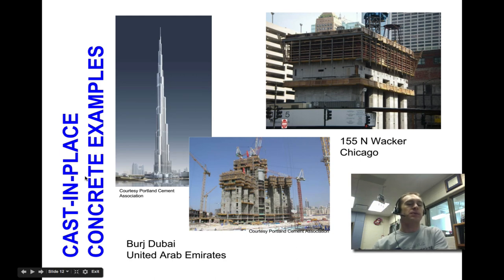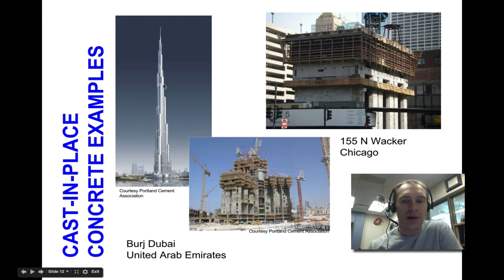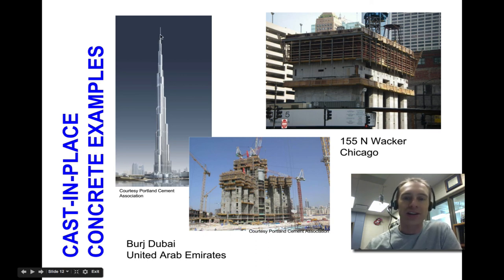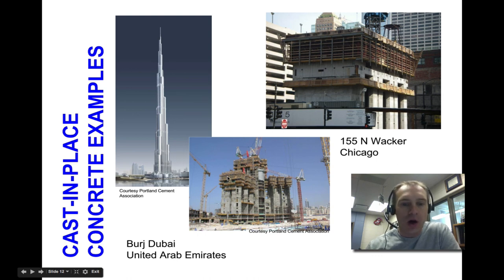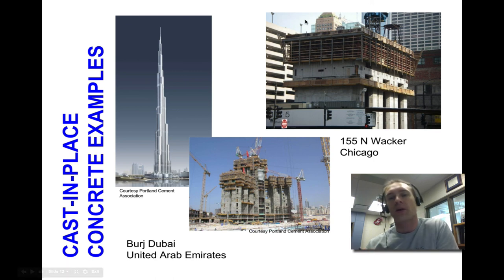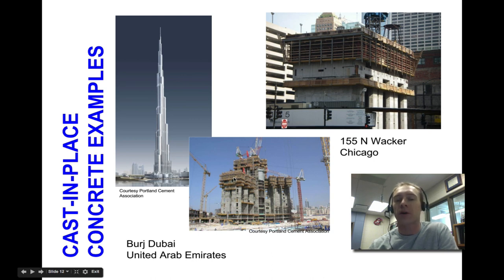Here are some cast-in-place concrete examples. The Dubai tower is a cast-in-place example — that is an enormous engineering achievement and currently the tallest building in the world. You can see all of the framework involved to cast it in place, because you have to build the forms and then pour the concrete. There's a lot of work involved in making the forms, and you have to tear them all down after casting in place.